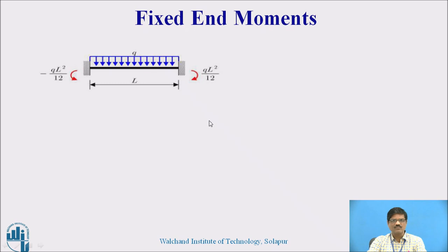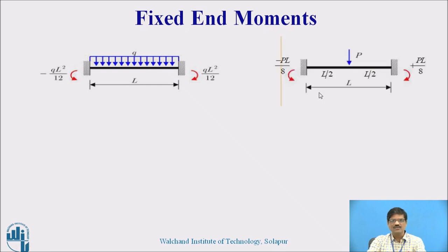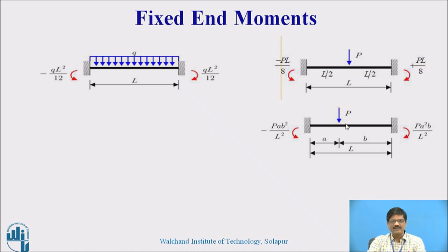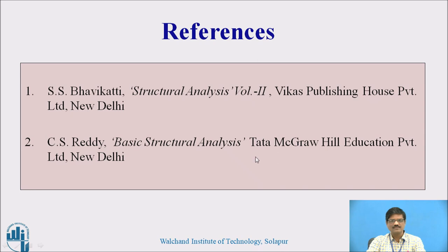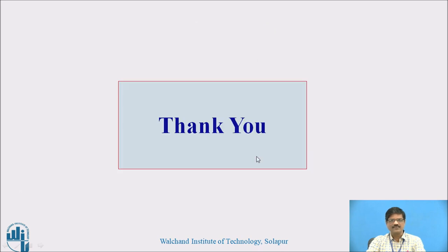These are some fixed-end moments for beams that we need when solving problems. For a fixed beam subjected to UDL with intensity Q, the fixed-end moment is QL² by 12. For a point load at the center, for an eccentric point load, for a triangular load, and for a couple present in between the span — the respective fixed-end moments with their directions are presented here as references. Thank you very much.